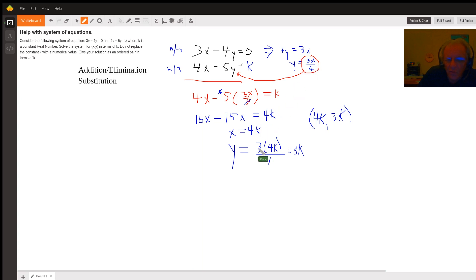So 3 times 4k over 4 gives us, with the fours canceling out, 3k. So there's your ordered pair solution in terms of k: (4k, 3k). And you can check your work too.